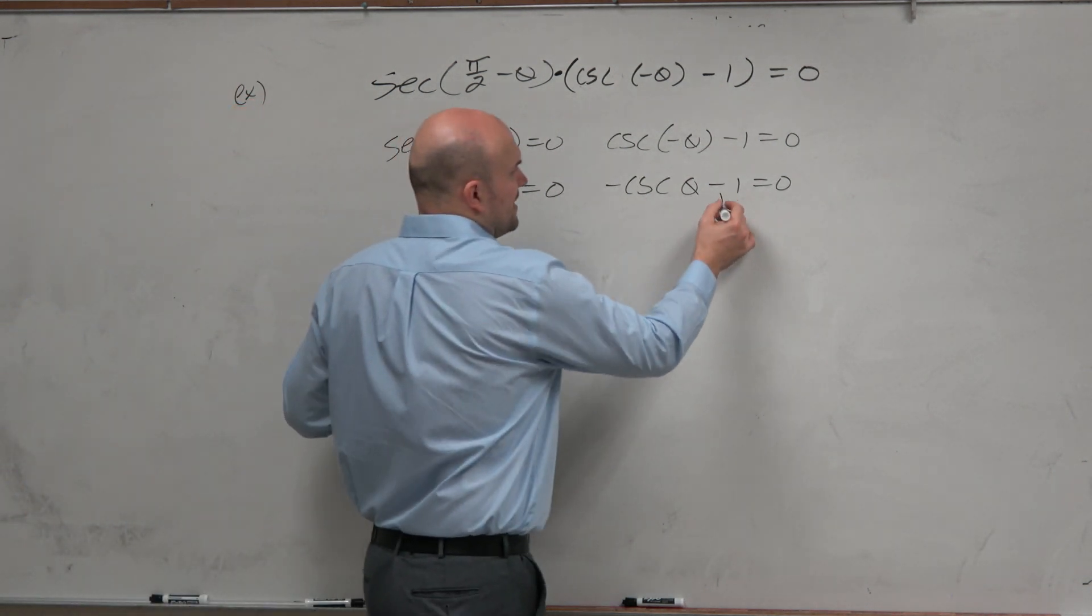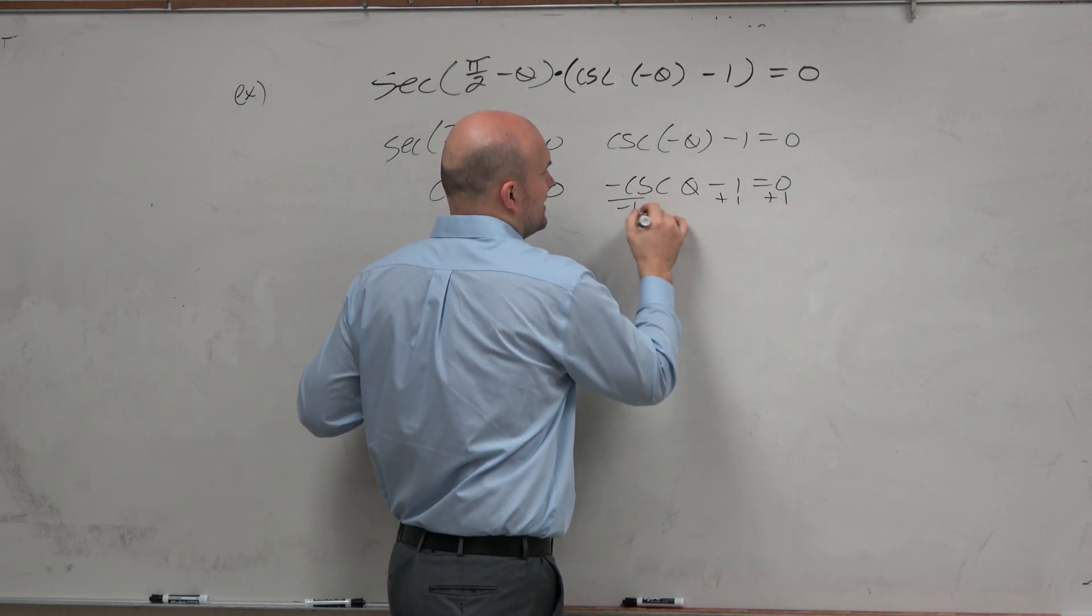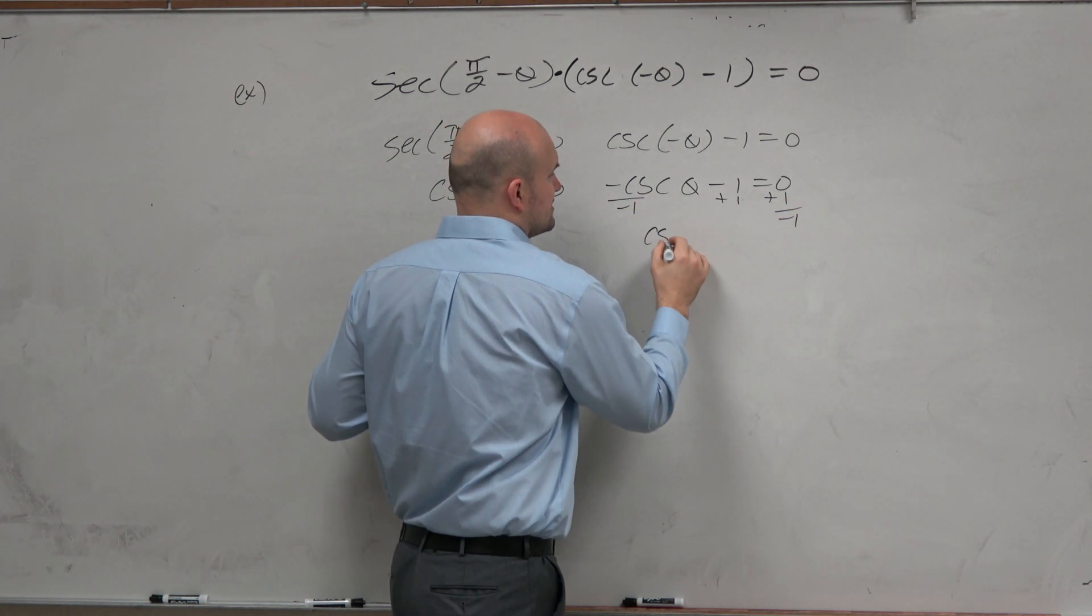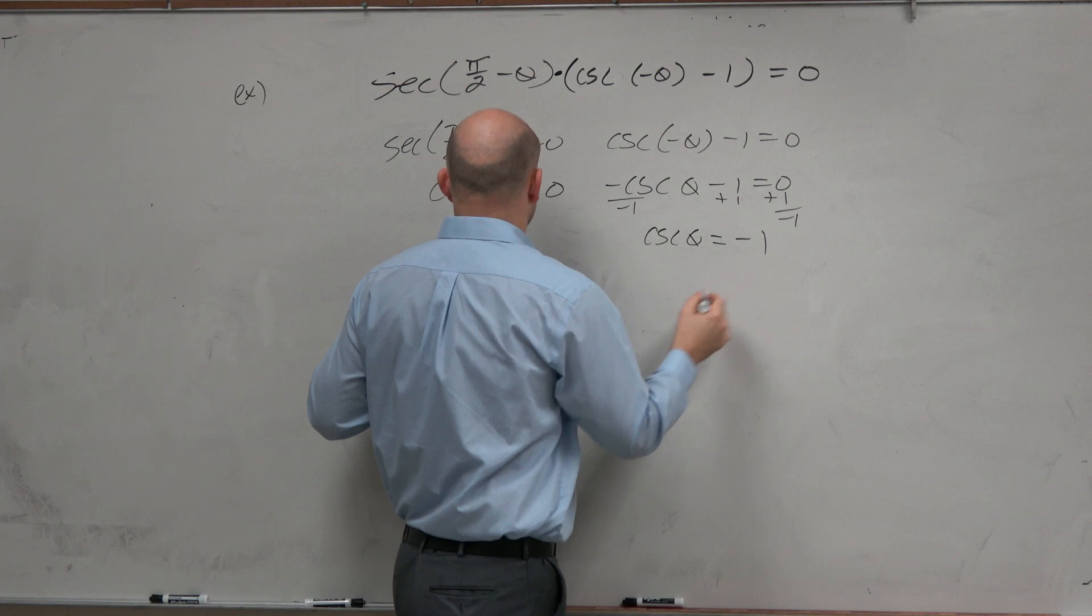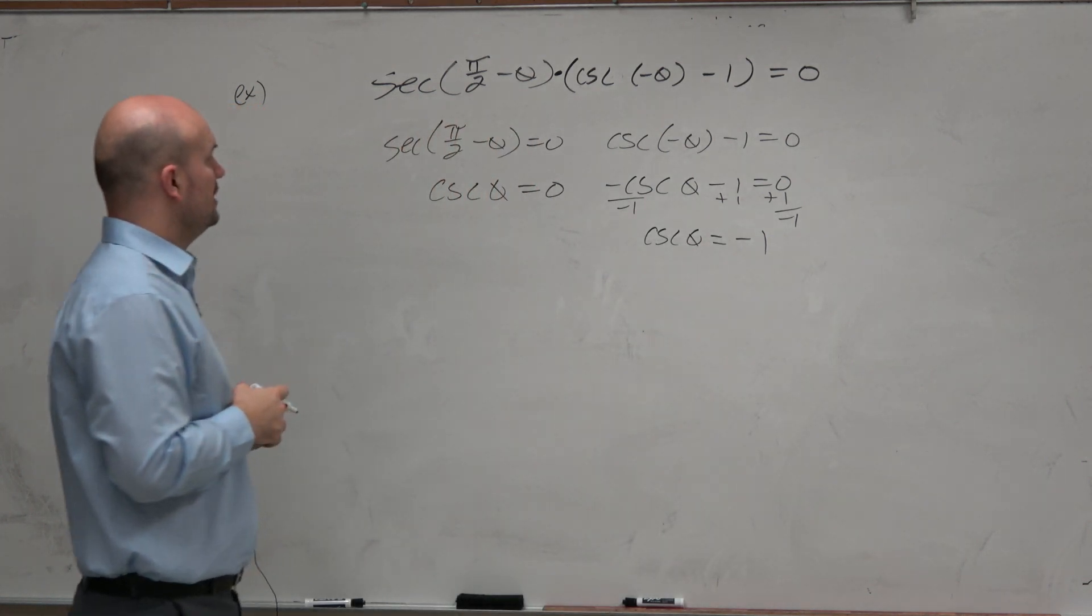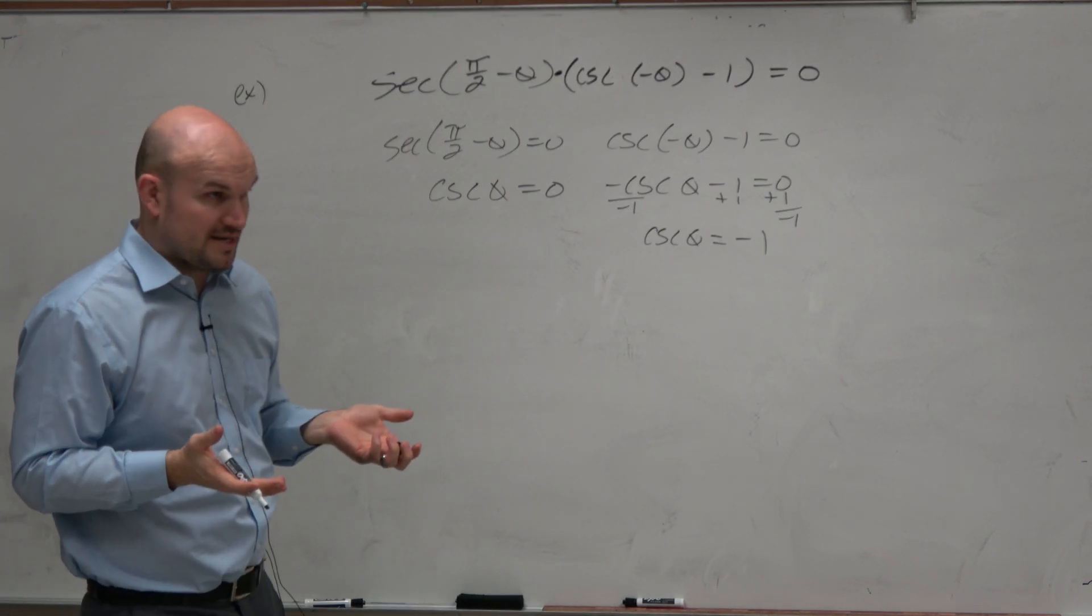So let's go ahead and solve this. If I add 1 here and then divide by negative 1, I'd get cosecant of theta equals negative 1. All right, so we have the cosecant for both of these now.